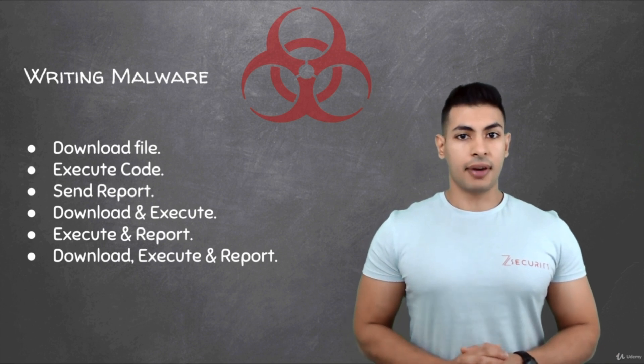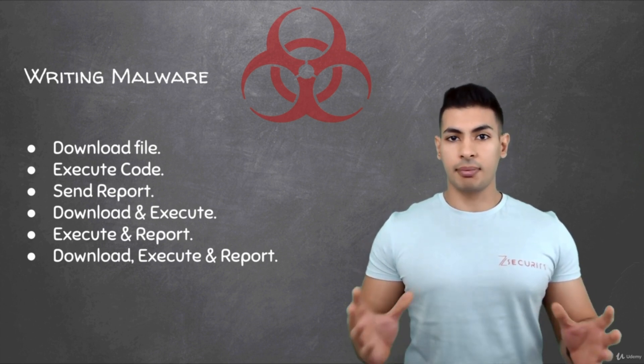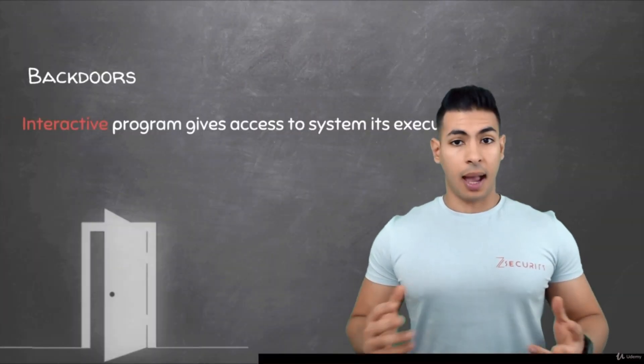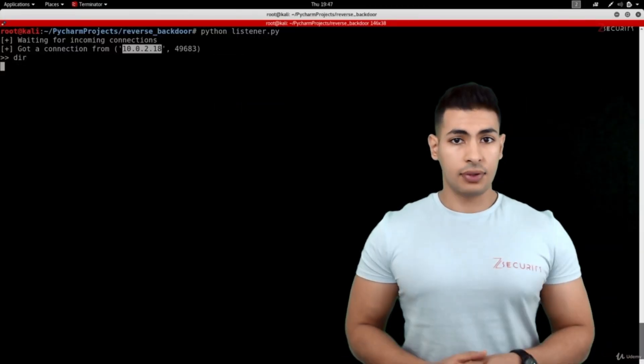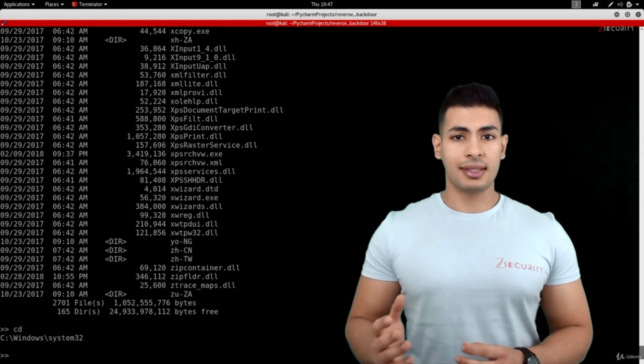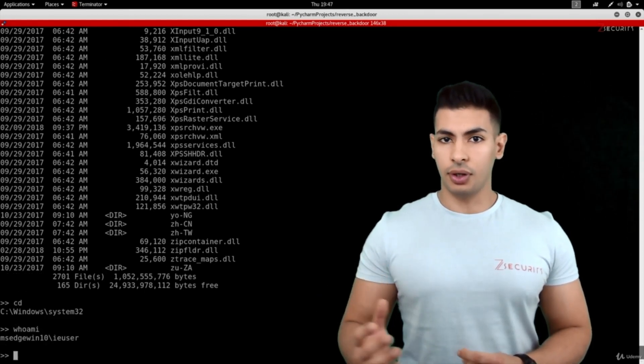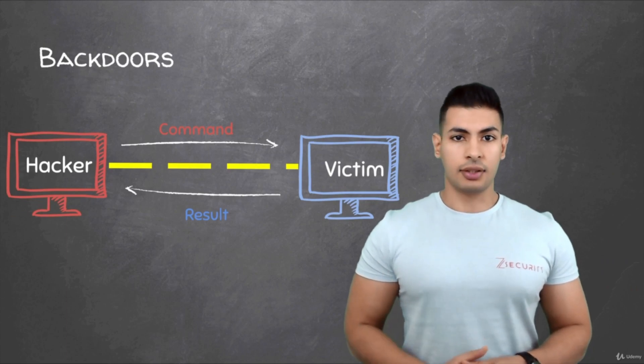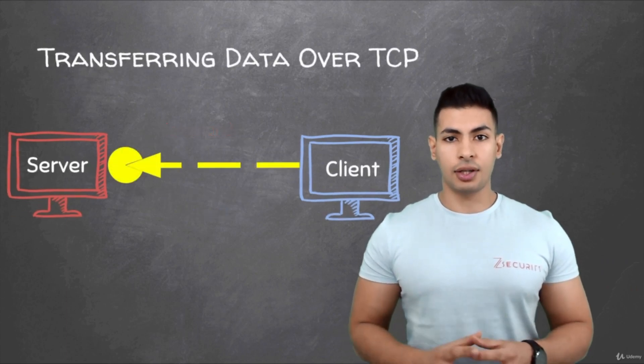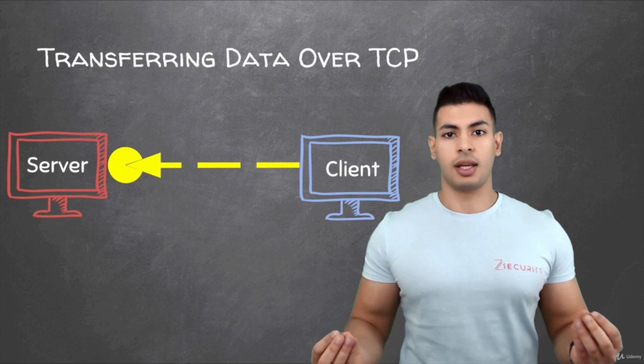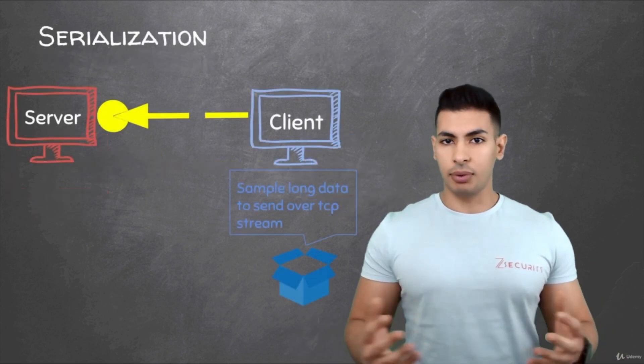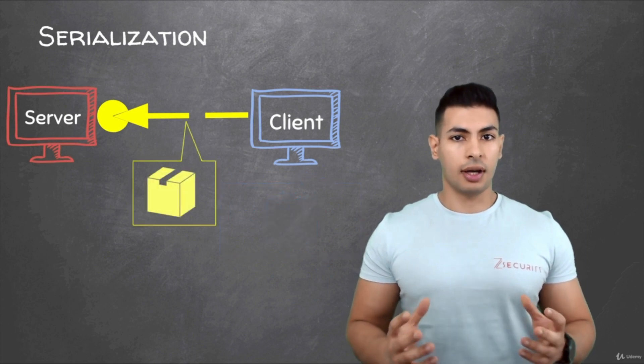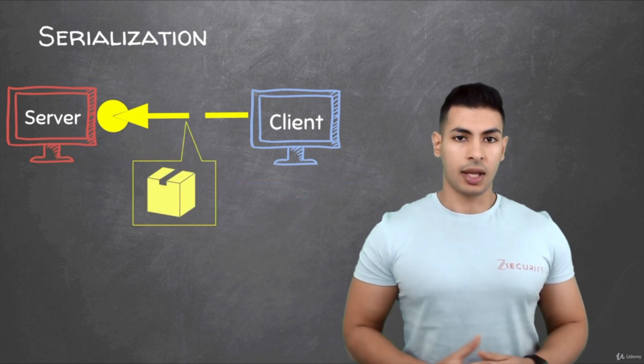Then we're going to advance into writing more complex malware and we'll start by writing a backdoor. A backdoor is a program that gives you full control over the system that it gets executed on. We're going to implement this using sockets and you're going to learn how to establish a connection between two devices and transfer data between them. This is very useful because it can be used in so many other scenarios other than hacking.